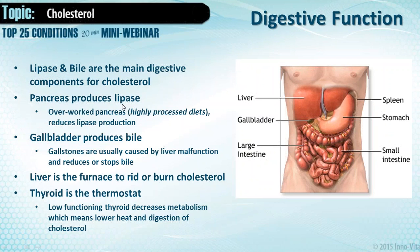Think of lipase like lye — you make soap out of lye and fat. Lipase and bile are like our soap to break down the cholesterol and fats we eat. When the pancreas is overworked by highly processed diets, it reduces lipase production. Without that, we have trouble in the gallbladder and more fat accumulating throughout the system. The gallbladder produces bile; gallstones are usually caused by liver malfunction that reduces or stops bile flow. Statins cause liver trouble, which then reduces bile, which leads to more cholesterol problems — it's counterproductive.